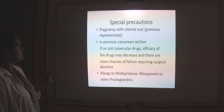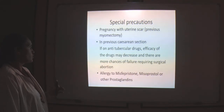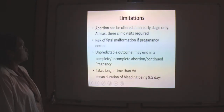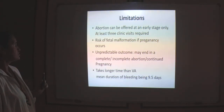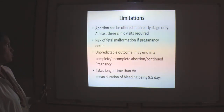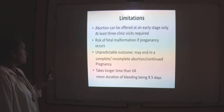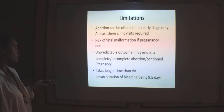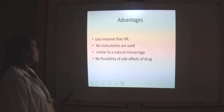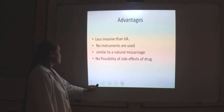Special precautions: if the patient has a uterine scar from previous myomectomy or previous cesarean section, or if she is on anti-tubercular drugs, the efficacy may decrease with more chance of failure requiring surgical abortion. If there is allergy to mifepristone, misoprostol, or other prostaglandins. Limitations of the medical method: abortion can be offered only at early stage up to 63 days; at least 3 clinical visits are required — the first for mifepristone, the second for misoprostol, then a follow-up; risk of malformation if pregnancy continues; outcome is unpredictable — may result in incomplete abortion or continued pregnancy; takes longer than vacuum aspiration with a mean duration of bleeding of 9.5 days. Advantages: less invasive, no instrumentation required, similar to natural miscarriage, no risk of anesthetic drug side effects.